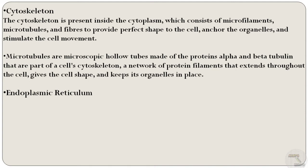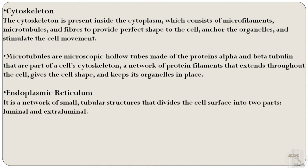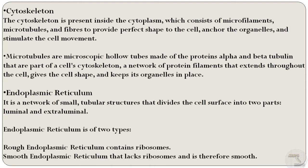Next is the endoplasmic reticulum. It is a continuous membrane system that forms a series of flattened sacs within the cytoplasm of eukaryotic cells. It serves multiple functions: it helps in the synthesis, folding, modification, and transport of proteins, and divides the cell surface into two parts — luminal and extra-luminal. The endoplasmic reticulum is of two types: the rough endoplasmic reticulum, which contains ribosomes, and the smooth endoplasmic reticulum, which lacks ribosomes and is therefore smooth.